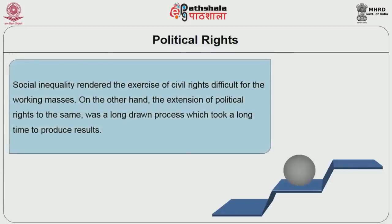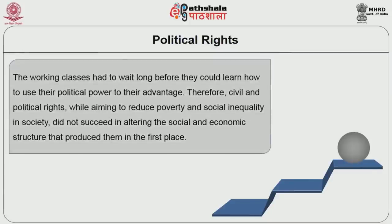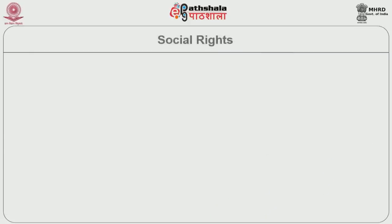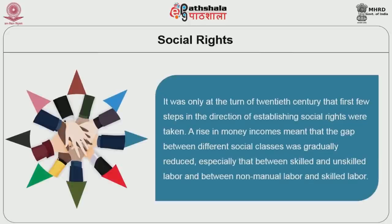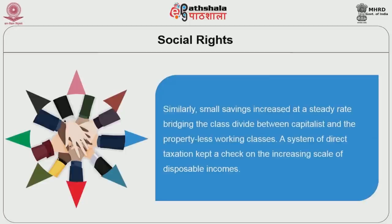Social inequality rendered the exercise of civil rights difficult for the working masses. On the other hand, the extension of political rights to the same was a long-drawn process which took a long time to produce results. The working classes had to wait long before they could learn how to use political power to their advantage. Therefore, civil and political rights, while aiming to reduce poverty and social inequality in society, did not succeed in altering the social and economic structure that produced them in the first place. Social rights. It was only at the turn of the 20th century that the first few steps in the direction of establishing social rights were taken.